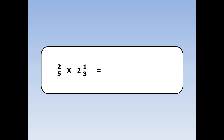2 fifths times 2 and 1 third. 2 and 1 third is a mixed number so I must turn it into a top heavy fraction before I multiply it. 2 and 1 third is the same as 7 thirds.